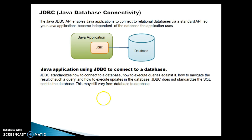A Java application uses JDBC to connect to a database. JDBC standardizes how to connect to a database, how to execute queries against it, how to navigate the results of such a query, and how to execute updates in the database. JDBC does not standardize the SQL sent to the database — this may vary from database to database. The SQL query you write in MySQL might vary from what you write in Oracle or some other database, but the way we connect from one database to another would be very similar.